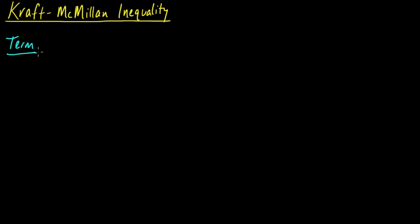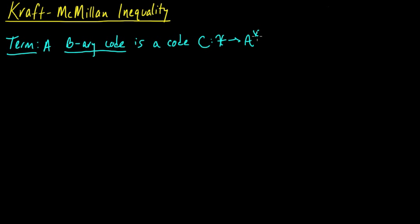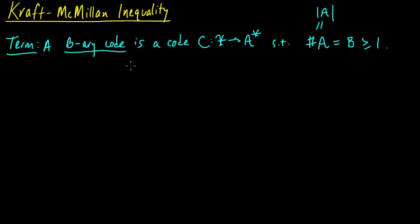Now at last we come to our first theorem, the Kraft-McMillan inequality, which gives us an intriguing characterization of uniquely decodable codes and prefix codes. First we need one more bit of terminology. A b-ary code for some positive integer b is a code c from our source alphabet X to A-star, the set of all strings of symbols from our code alphabet A, such that the size of A is b.